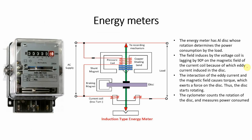Energy meters کے اندر eddy current use ہوتا ہے۔ Energy meter everyday life کے اندر use ہوتا ہے — گھروں میں اور industries کے اندر جو power consume ہو رہی ہے اس کو measure کرنے کے لیے۔ اس کے اندر ایک shiny metal disc ہوتی ہے جس کی motion کی وجہ سے جو power consume ہو رہی ہے اس کو record کیا جاتا ہے۔ Energy meter has an aluminium disc whose rotation determines the power consumed by the load. The field produced by the voltage coil is lagging by 90 degrees on the magnetic field of current coil, because of which eddy current is induced in the disk.